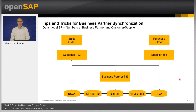I have already talked about numbering several times. With the next slides, I want to explain the options that are available. In CVI, we have to consider three objects. Classic SD and MM transactions will still use customer and vendor master data, and in S4HANA the leading object will be the business partner — newer applications will use this master data object. The picture shows the situation when using different numbers for all three of these objects.